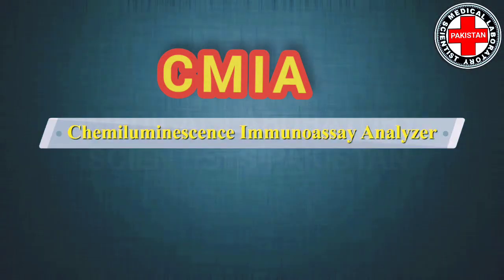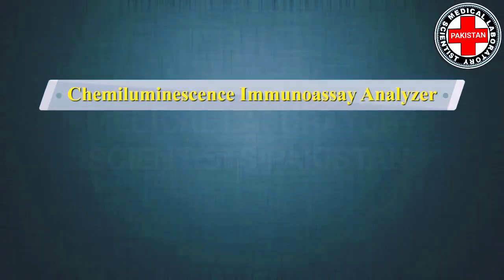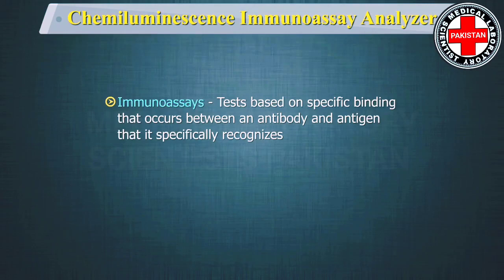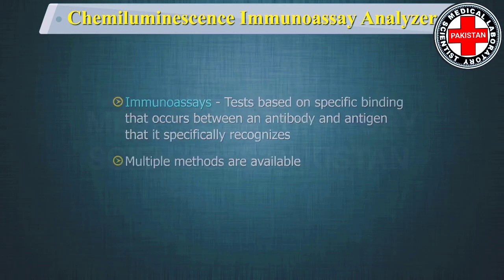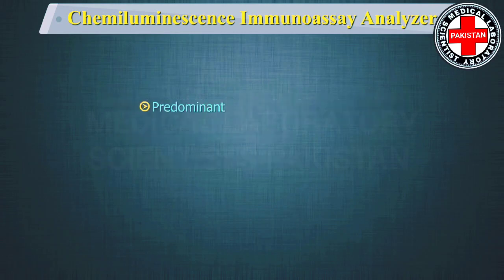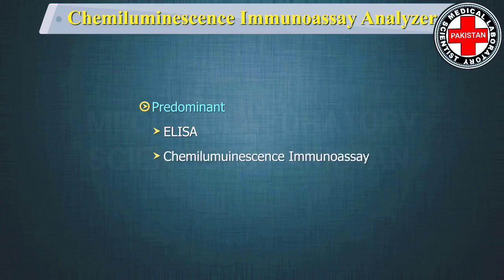Chemiluminescence immunoassay analyzer. Immunoassays are tests based on the specific binding that occurs between an antibody and the antigen that it specifically recognizes. Multiple methods are available for immunoassays, and the predominant ones used are ELISA and chemiluminescence immunoassay.